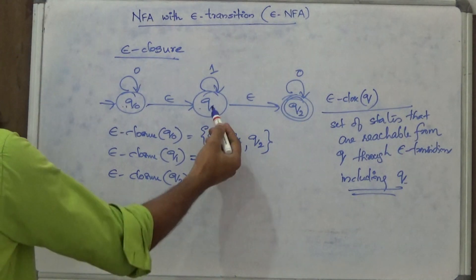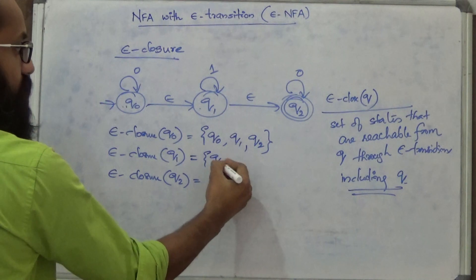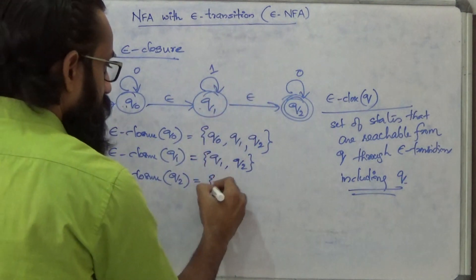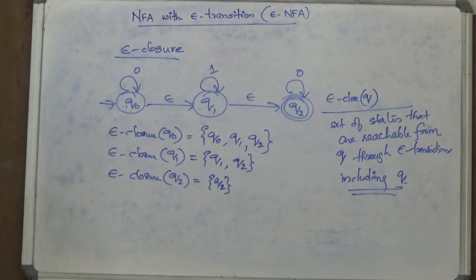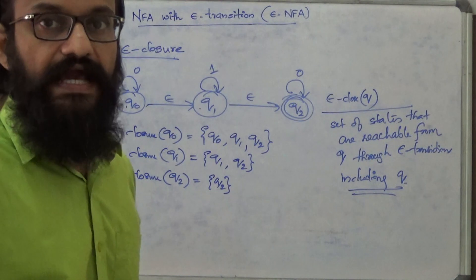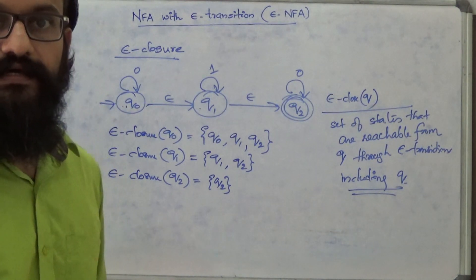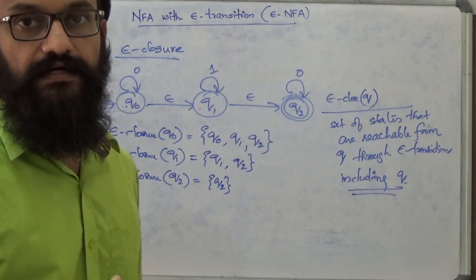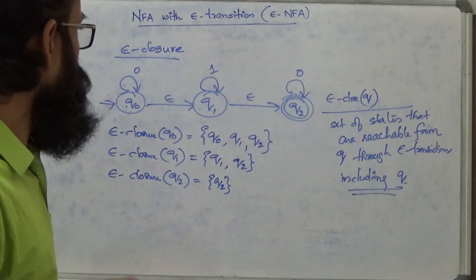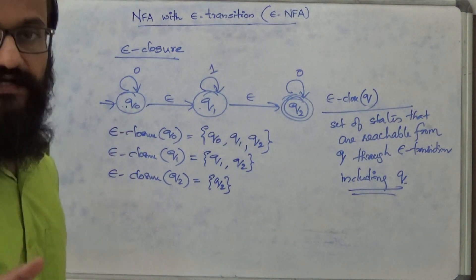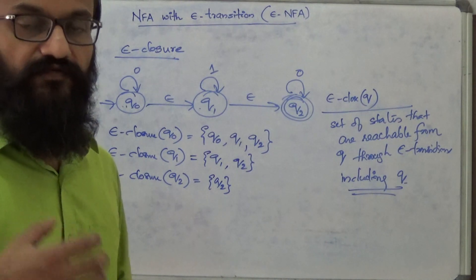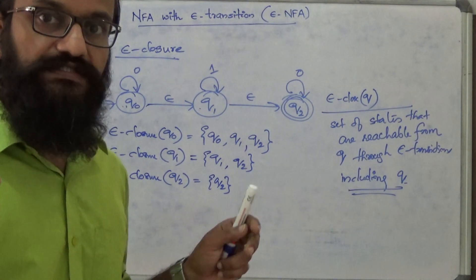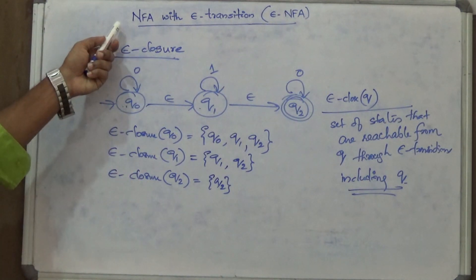That is what we mean by epsilon closure — for example, epsilon closure of Q2 would just be Q2 itself if there are no epsilon transitions out of it. The language accepted by Epsilon NFA contains the set of strings accepted by the machine. Starting from the start state, by consuming the input string, if it goes to a final state through some path, that string is accepted. All such strings together form the language recognized by the Epsilon NFA.